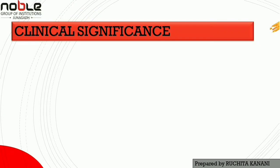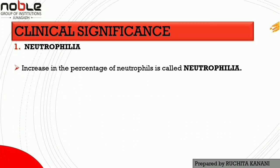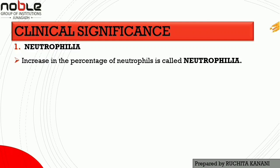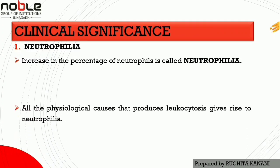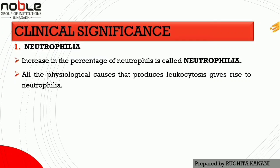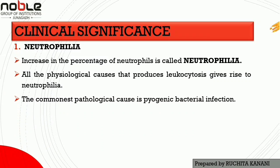Now let's look at clinical significance — what happens when the concentration of neutrophils increases or decreases. An increase in the percentage of neutrophils is called neutrophilia. All physiological causes that produce leukocytosis give rise to neutrophilia. The commonest pathological cause is pyogenic bacterial infection, meaning pus-producing infection.